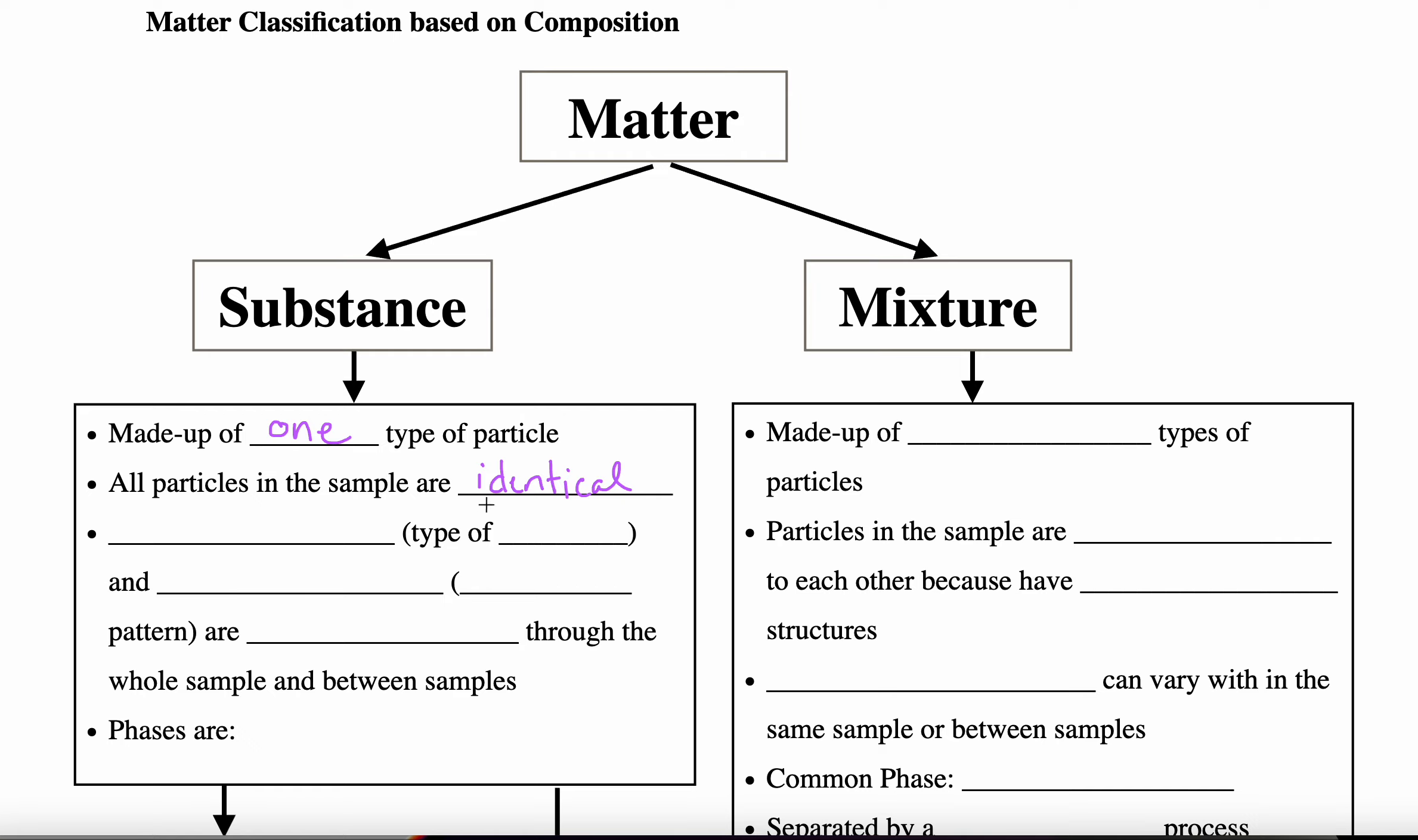The reason that they are identical to each other is because when we look at their composition, we're looking at the type of atoms present. But we also look at the structure of the particles, which refers to how all those atoms are linked or bonded to each other. So the bond pattern.